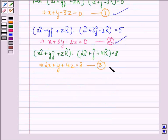Now, solving equations 1, 2, and 3 for x, y, and z, we get x equal to 1, y is 2, and z is 1.